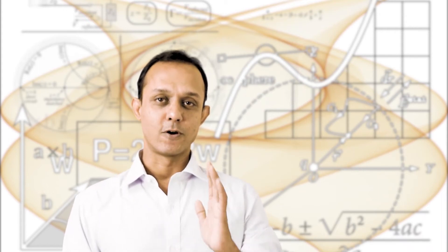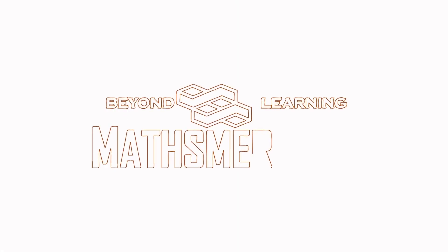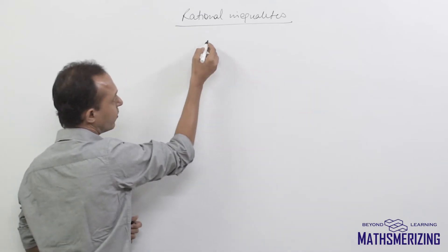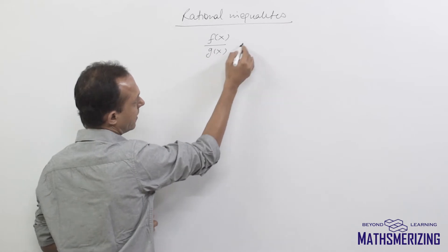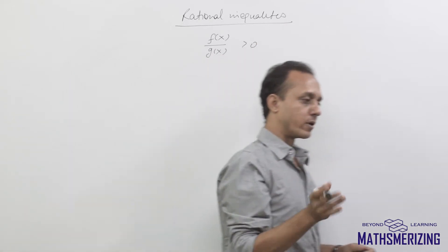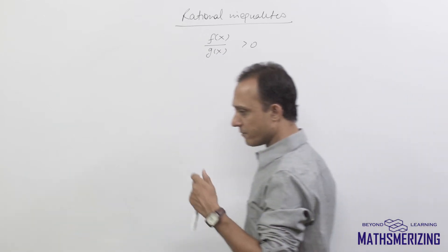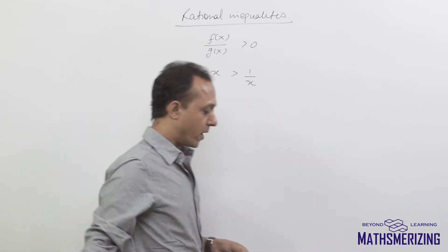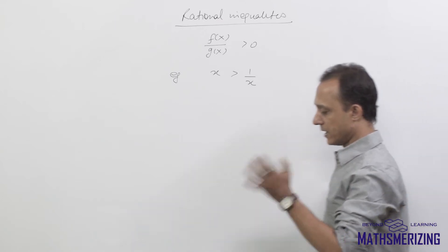Hello and welcome to mesmerizing.com. Any inequality which is of the form f(x) upon g(x) greater than 0, less than 0, greater than or equal to, or less than or equal to is a rational inequality. As a simple example, x is greater than 1 by x — this is an example of a rational inequality.